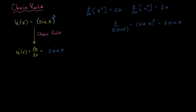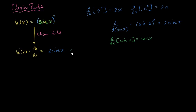We say 2 sine of x times the derivative of sine of x with respect to x. That's more straightforward and intuitive. The derivative of sine of x with respect to x — we've seen this multiple times — is cosine of x. So times cosine of x.